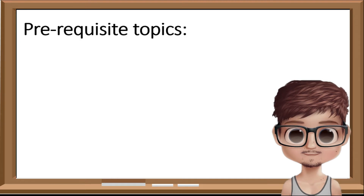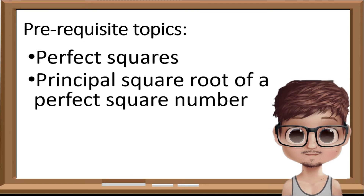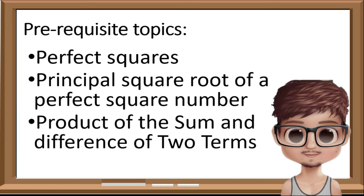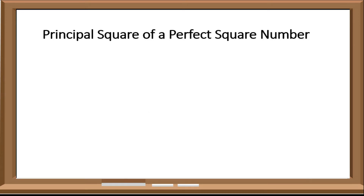Prerequisite Topics — these are the topics that you should already be familiar with: Perfect Squares, Principal Square Root of a Perfect Square Number, and Product of the Sum and Difference of 2 Terms. Let us have a quick run through about the prerequisites.